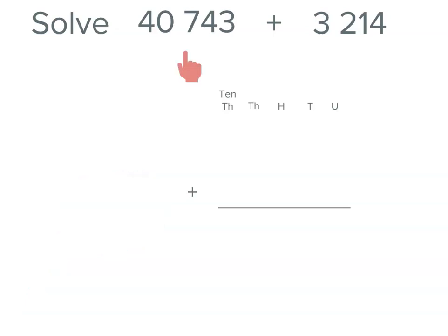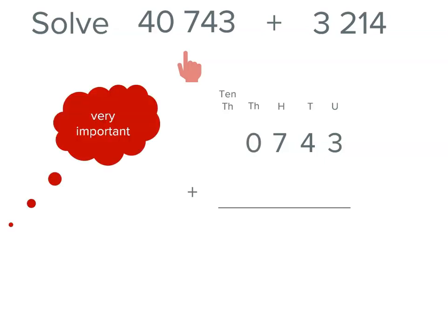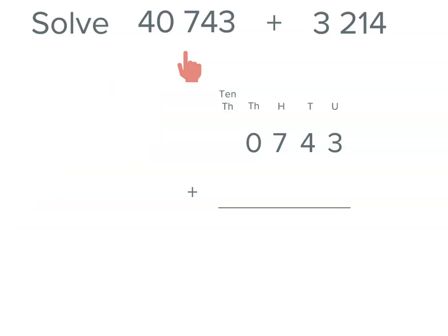So if we write this number in, 40,743, we have three units, four tens, seven hundreds, no thousands. Now, it's really important we put that zero there. Otherwise, the numbers, if we didn't have our headings in, we might actually lose that place. So it's called a zero placeholder. And we've got four in the tens of thousands place.